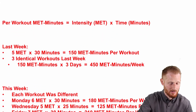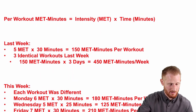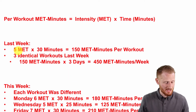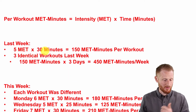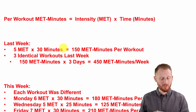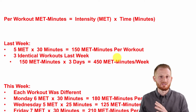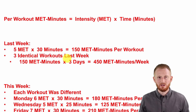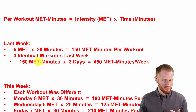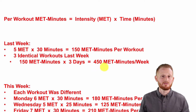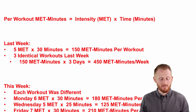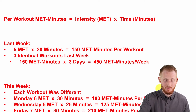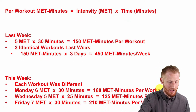Let's look at last week. She did five METs for 30 minutes, so five times 30 gives you 150 MET-minutes per workout. She did three identical workouts, so we multiply 150 MET-minutes by three days and get 450 MET-minutes for the week — that was her weekly exercise volume.